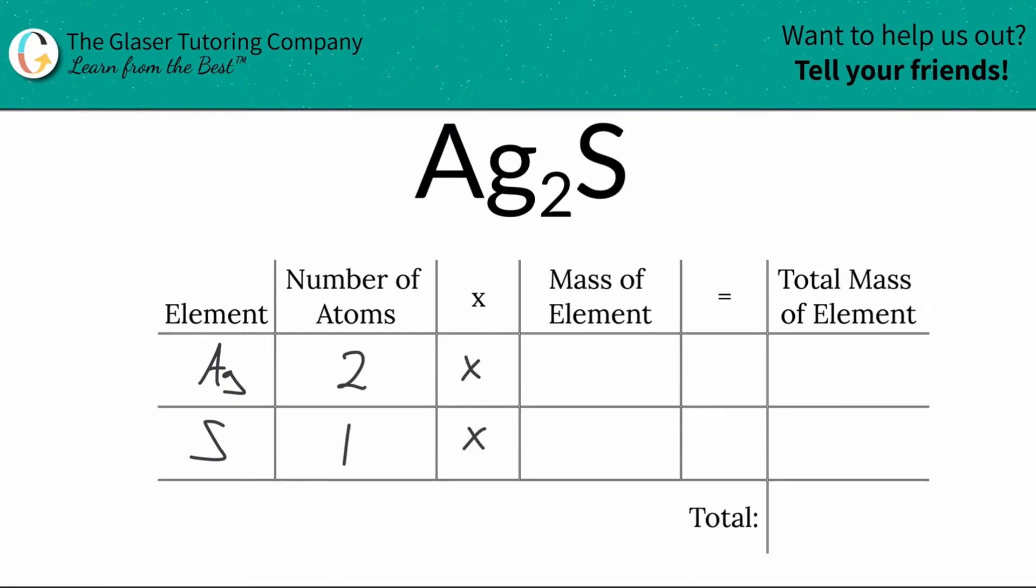What we're going to do is take the number of atoms there and multiply it by the mass of each particular element. We need the periodic table for this, so let's look at it.